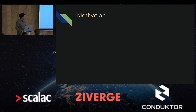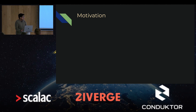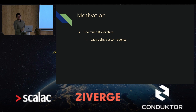Now let's talk about some of the problems or pain points that led me to start this project. As a Scala developer, if you want to build a Lambda function, you only get to use the Java runtime that AWS provides you. But using the Java runtime comes with several drawbacks. The first one is that it requires a lot of boilerplate. For example, if you try to create your custom events, you end up with a lot of boilerplate that we are not used to seeing as Scala developers.